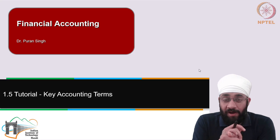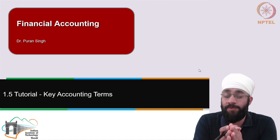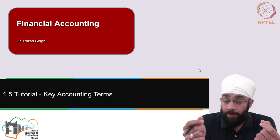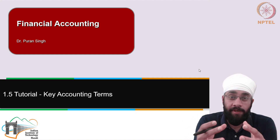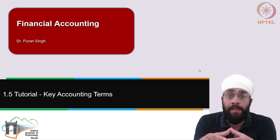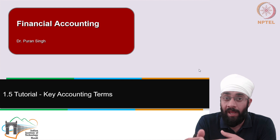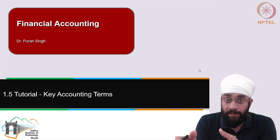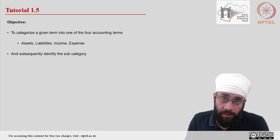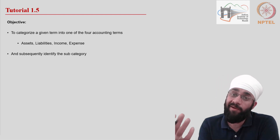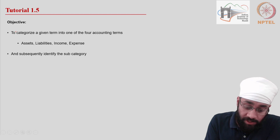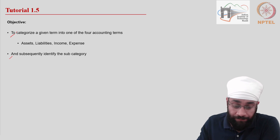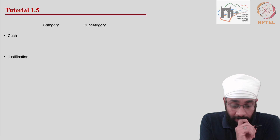This is a tutorial where we will put into practice the concepts of asset, liability, income, and expenses. It is appropriate to spend some time consolidating and building more understanding of what these four terms mean, and which of the various items or transactions in a business should fall into these categories. We will look at a list of items one by one and discuss categorization, including sub-categorization within each of the four terms.